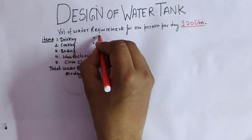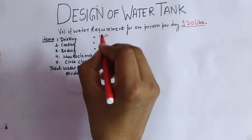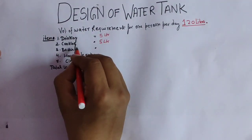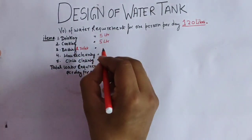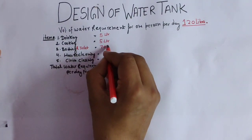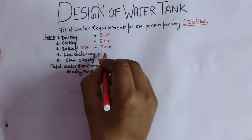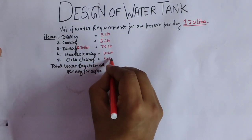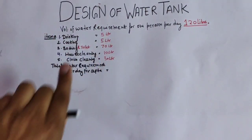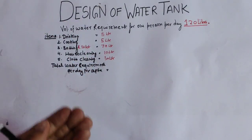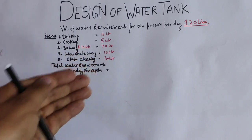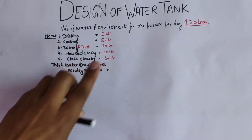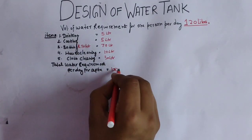For drinking, I am taking 5 liters. Cooking — 5 liters. Bathing and toilet purpose — I am taking 70 liters. House cleaning — 10 liters. Cloth washing — 30 liters. So if we calculate these items: 5 plus 5 is 10, plus 70 is 80, plus 10 is 90, and plus 30 gives a total of 120 liters. Total water requirement per day per person is 120 liters.